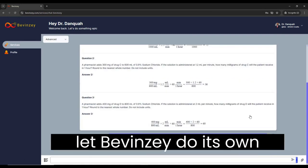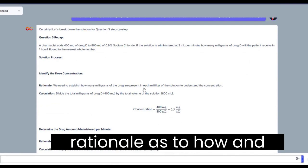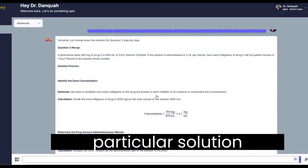Click on the arrow. Let bvinci do its thing. And there you have it. It gives you the step-by-step breakdown with the rationale as to how and why you're using this particular solution approach.